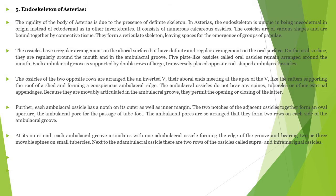The ossicles have an irregular arrangement on the aboral surface but have a definite and regular arrangement on the oral surface. On the oral surface, they are regularly arranged around the mouth and ambulacral groove. Five plate-like ossicles form the oral ossicle and aboral ossicle — two types of ossicles are present. Each ambulacral groove is supported by double rows of large transversely placed ossicles. Each ambulacral ossicle has a notch on its outer surface and inner margin, and two notches of adjacent ossicles together form an oval aperture — the ambulacral pore — through which the tube feet pass.